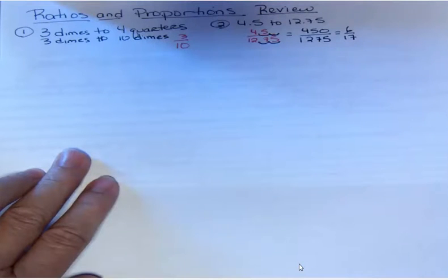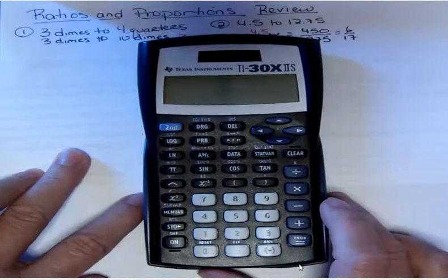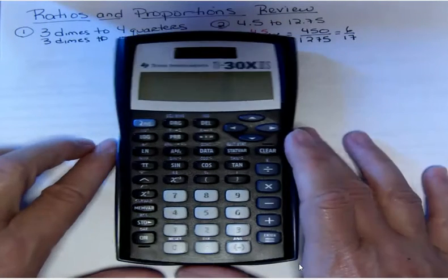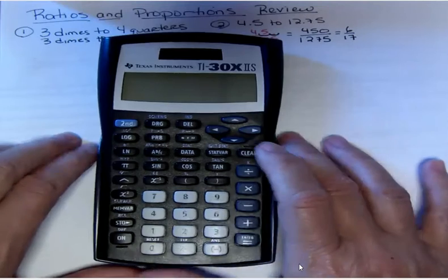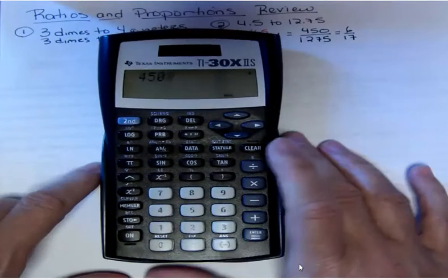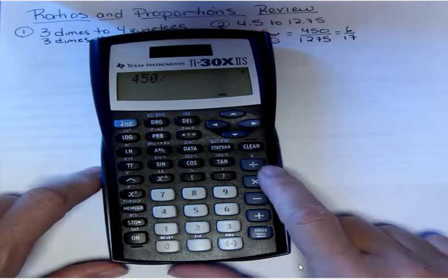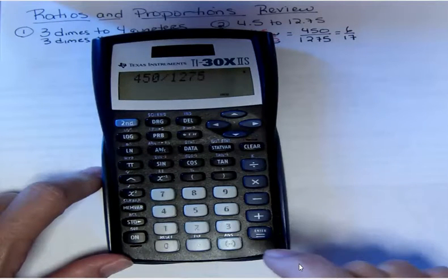Let me show you how to do this on a TI-30X. If you have a TI-30X, you do 450, I need to turn it on first, 450, and I put my division sign over here and then 1275.